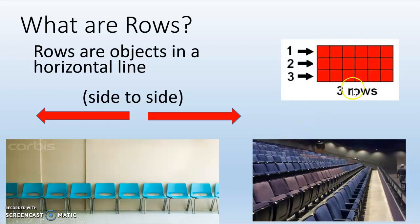As you can see, this array has three rows. One, two, three. Three rows.